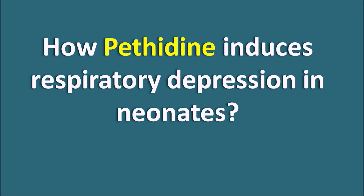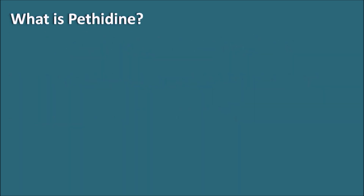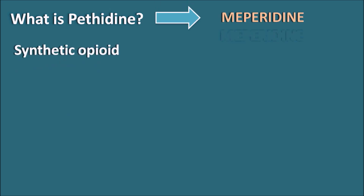Pethidine, also called Meperidine, is a synthetic opioid categorized as an analgesic agent, just like morphine. Morphine is a natural analgesic whereas Pethidine is a synthetic analgesic.